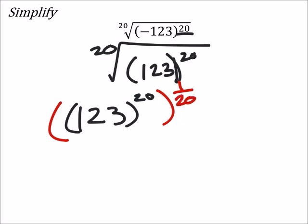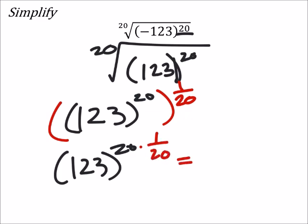So, the index will always be in the denominator of that fraction, which is an exponent. So, this is 123 to the power of 20 times 1 over 20, which is the same as 123.